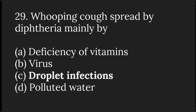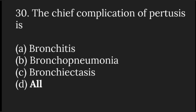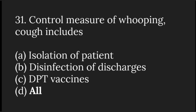Whooping cough spreads mainly by droplet infection. The chief complaints of pertussis are bronchitis, bronchopneumonia, and bronchiectasis — so the answer is all. Control measures of whooping cough include isolation of the patient, disinfection of discharges, and DPT vaccine — so the answer is all.